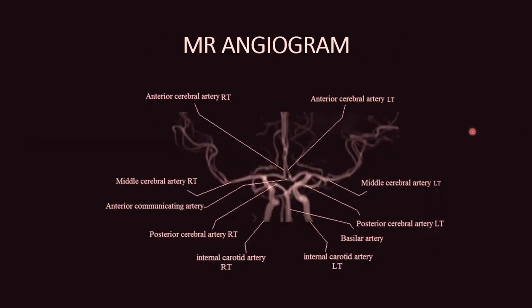Here is an MR angiogram image showing the single basilar artery bifurcating into the bilateral posterior cerebral arteries. The vertebrobasilar system and the carotid system with its ICA segments divide into the anterior cerebral artery, while the MCA is not part of the circle of Willis as it goes laterally.